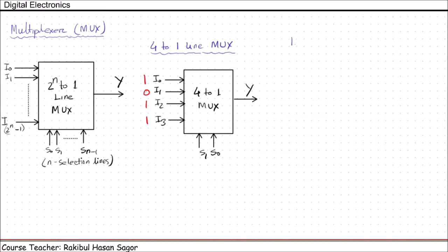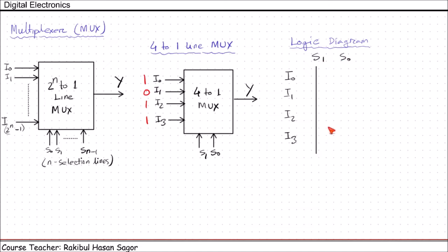Now let us construct the logic diagram for the 4-to-1 line MUX. We have 4 inputs — I0, I1, I2, I3 — and 2 selection lines, S1 and S0. This line will represent S1 directly and this line will represent S0 directly. This line will represent S1 prime, and this line will represent S0 prime. I0 will be transferred if S0 equals 0 and S1 equals 0.